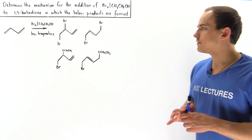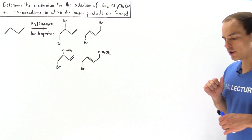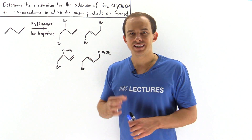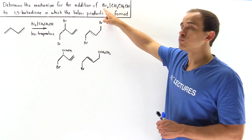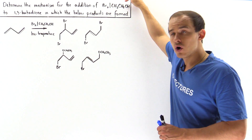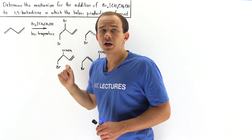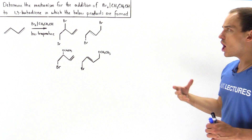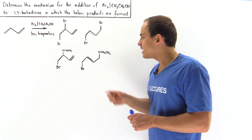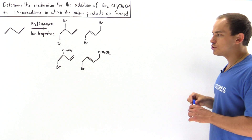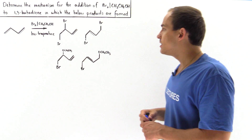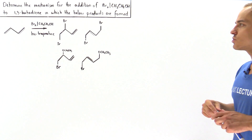Let's take a look at the following example in which we're going to determine the reaction mechanism of the addition of diatomic bromine in the presence of ethanol into our 1,3-butadiene. We know that the following four products are formed in different concentrations, and our goal is to determine the mechanism by which these products are actually formed.